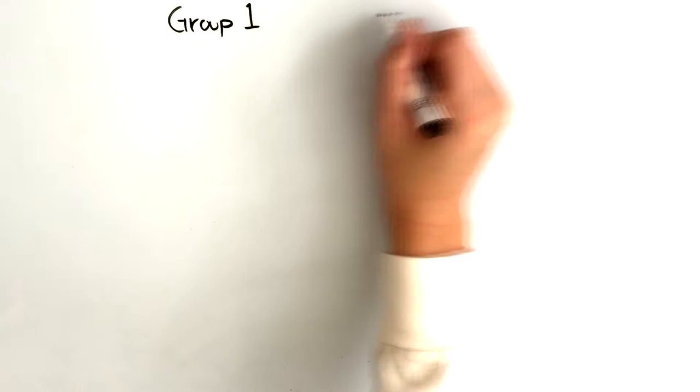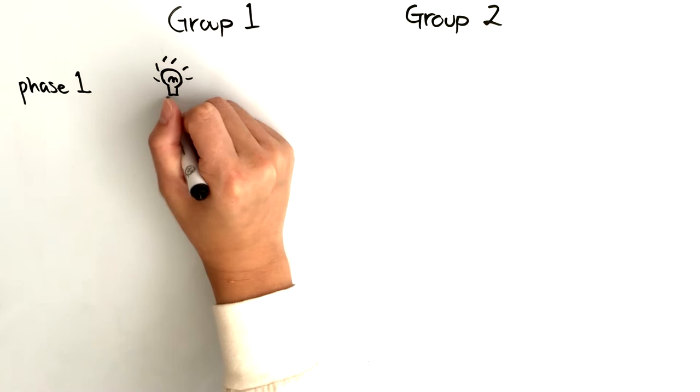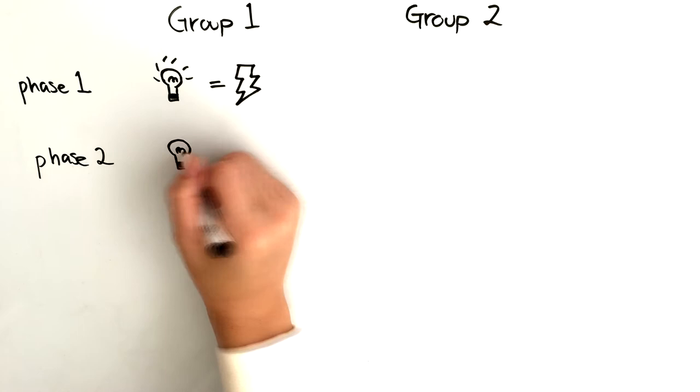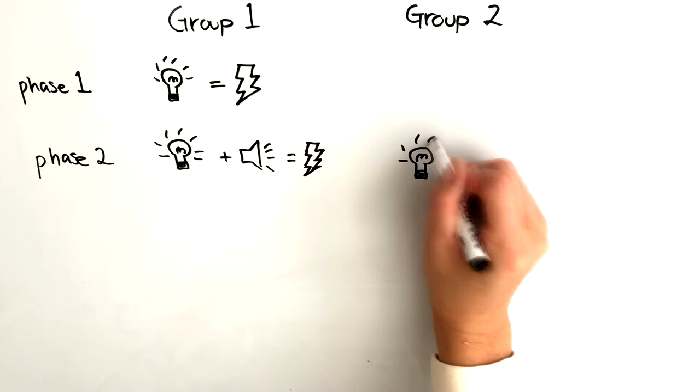In Kamen's blocking experiment, two groups are involved. In the first phase of the experiment, the first group is presented with a pairing of light and shock, while the second group is not presented with the previous pairing. In phase two, both groups receive a light, tone, and shock.